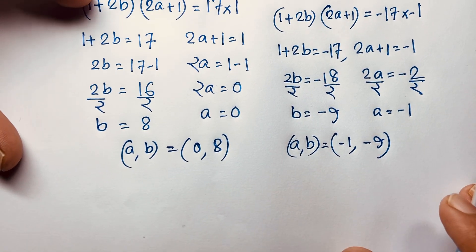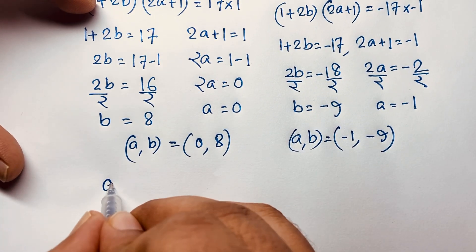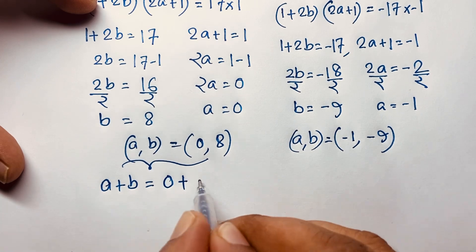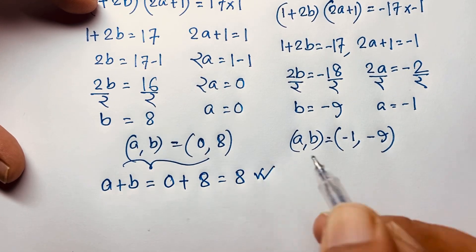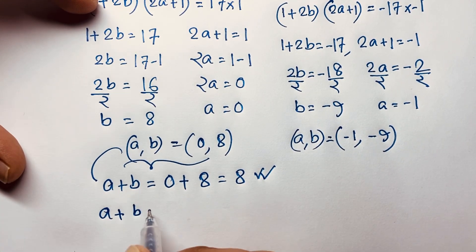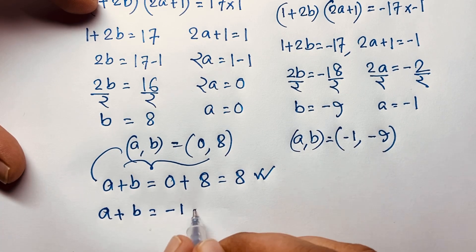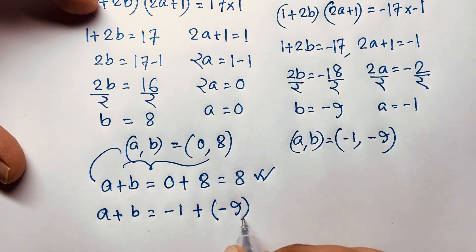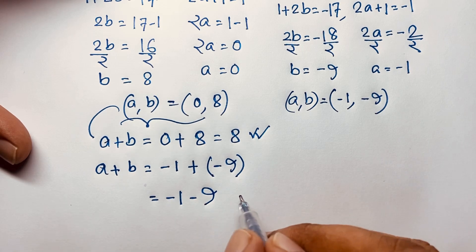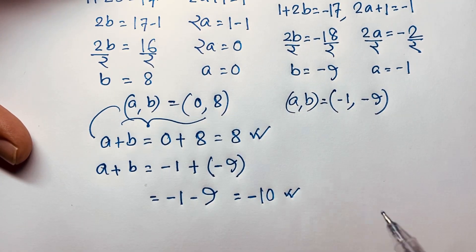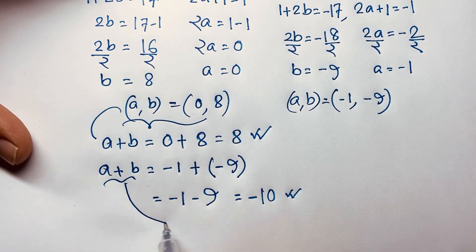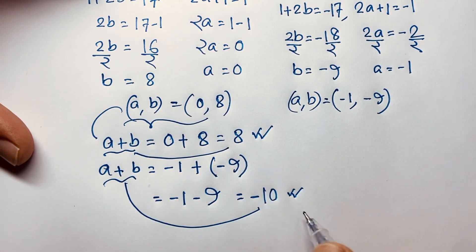Our target is A plus B. In the first case, A plus B is equal to 0 plus 8, which is 8. This is our final answer. In the other case, A plus B is equal to negative 1 plus negative 9, which is negative 10. This is the other final answer. So the values of A plus B are 8 and negative 10.